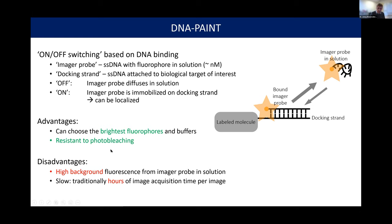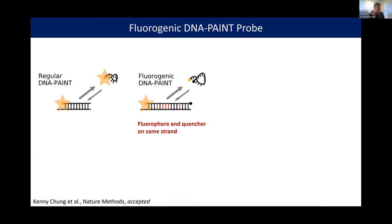You typically have to fight with high background or lower the imager probe concentration, which requires that the binding on-rate becomes quite low. It takes a long time to acquire enough blinking events, and you therefore need to image quite slowly. This has been one of the big bottlenecks of DNA-PAINT over the last years, and we have addressed this with the development of the fluorogenic DNA-PAINT probe — a paper which should come out in about a month in Nature Methods.